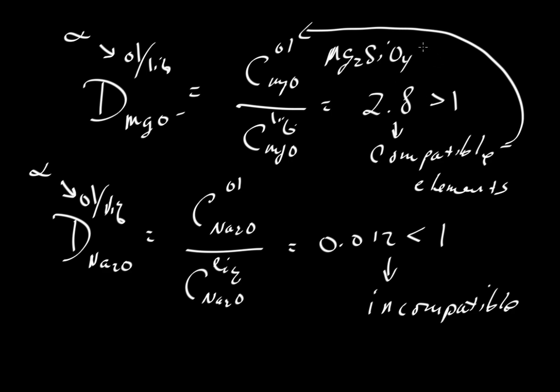But if we think about the solid solution series, forsterite-fayalite, the other common end-member is Fe2SiO4, so that's fayalite. This is a 2-plus cation that's going in here. We have iron here that's replacing the 2-plus cation for magnesium. What about a 1-plus cation like sodium?